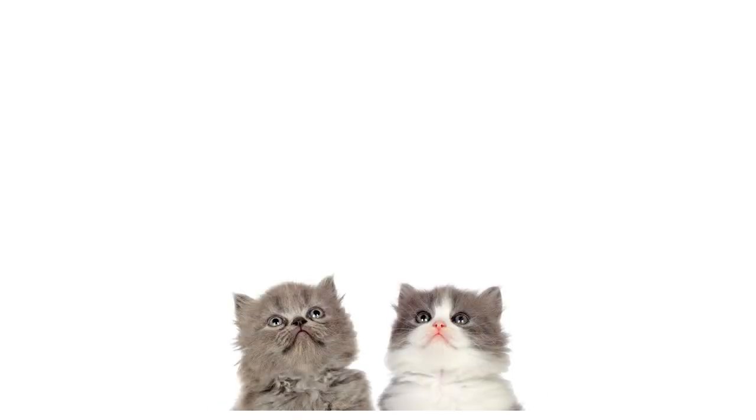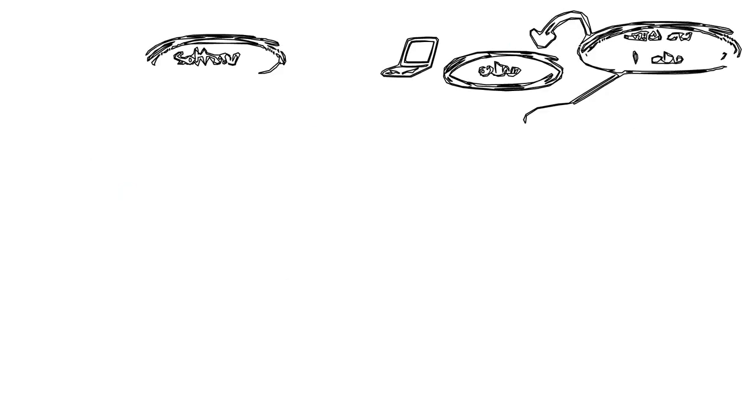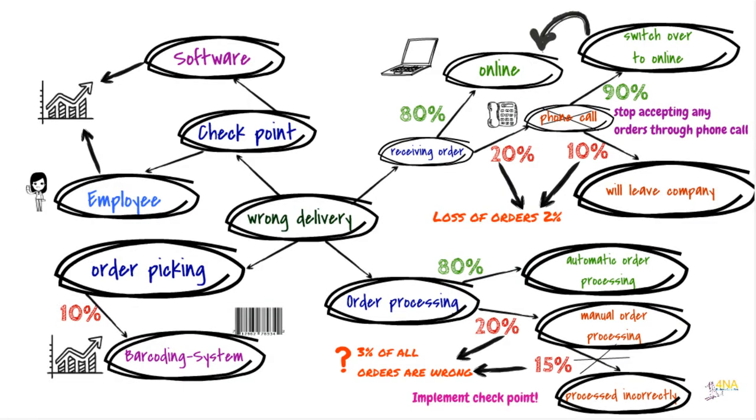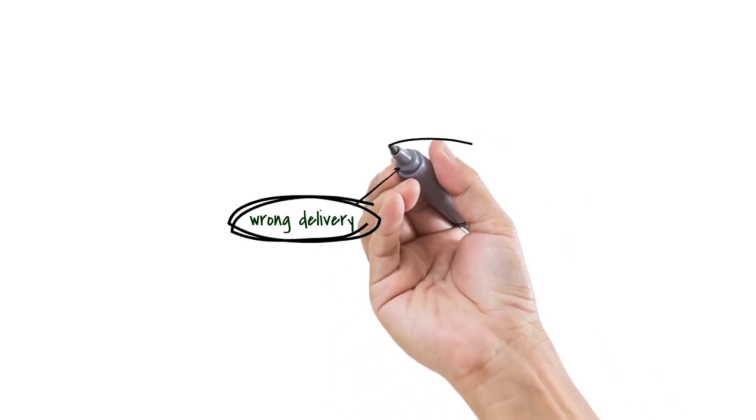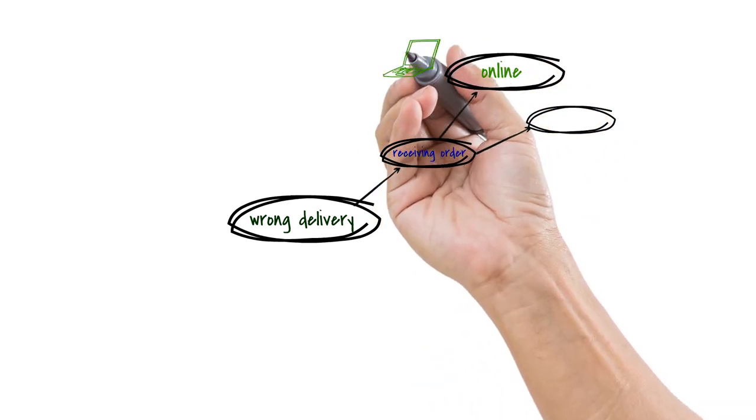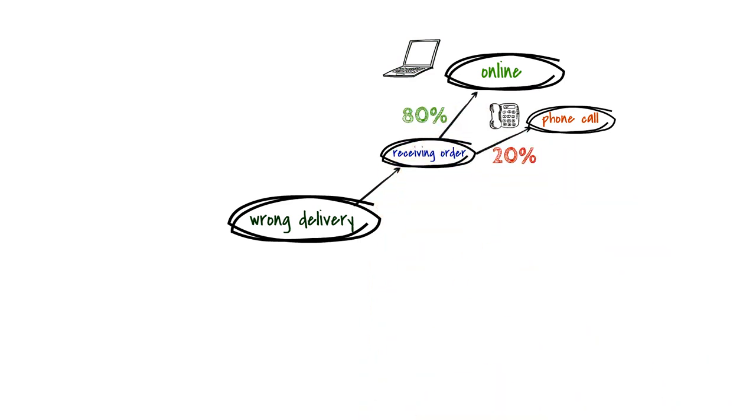Now it's time to find the right solutions for the problem. First, we should lay out all the information in a clear way. For that, we will be using the mind mapping technique. Mind mapping is an easy way to visualize information, ideas and plans that are connected to the main subject. The main subject in our exercise is wrong delivery. The first connection to the main subject is the way we receive the order from the customer. As mentioned, we receive the order either online or through a phone call. We also know that we receive 80% of all orders online and 20% through a phone call.